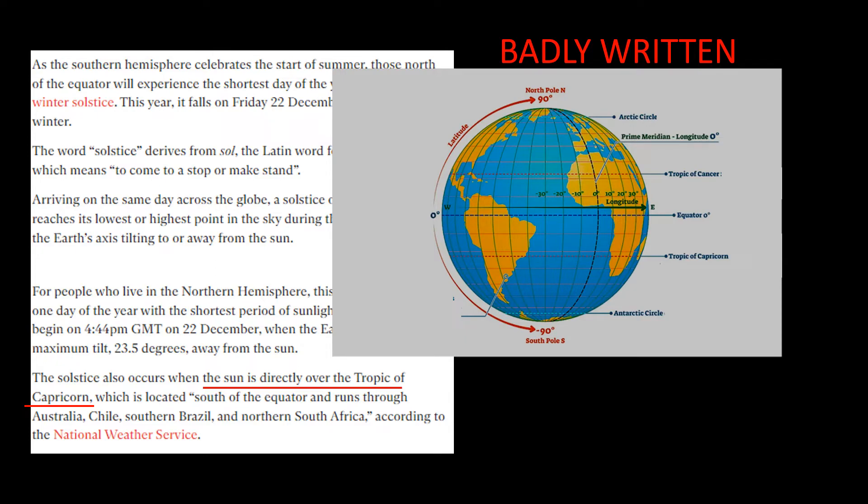So probably it should have said something like this: At the December solstice, the location where the sun is directly overhead lies on the Tropic of Capricorn.